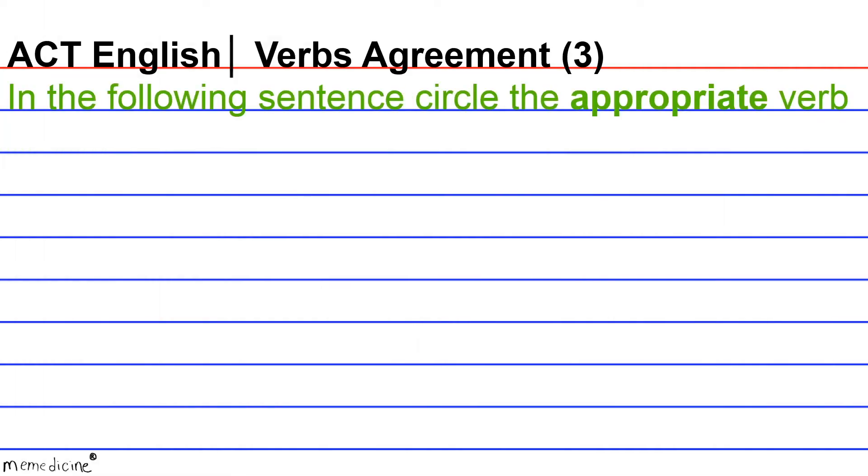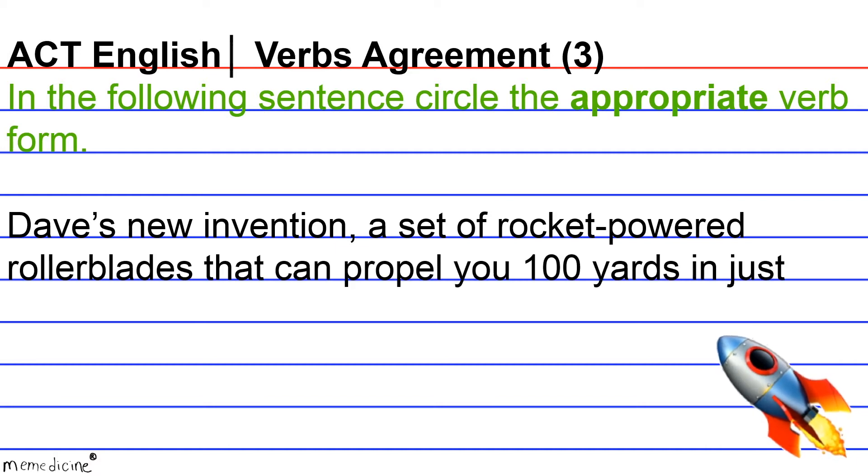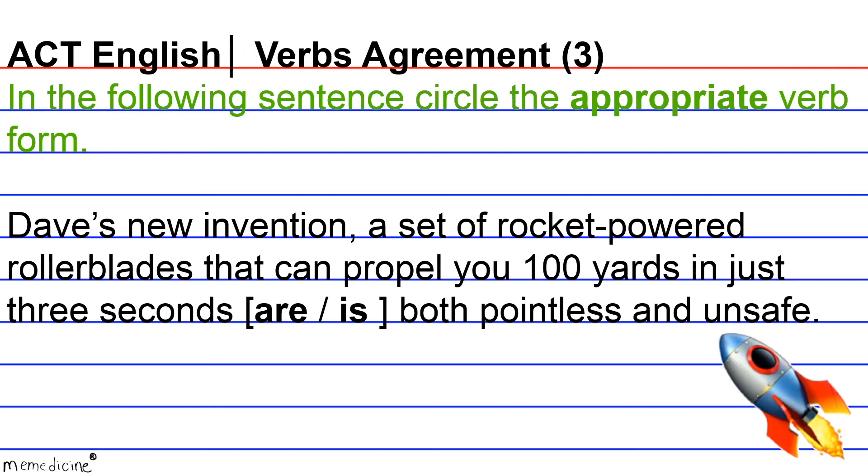In the following sentence, circle the appropriate verb form. Dave's new invention, a set of rocket-powered rollerblades that can propel you 100 yards in just 3 seconds, are or is both pointless and unsafe.